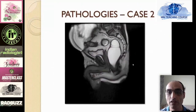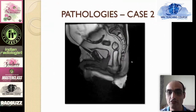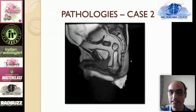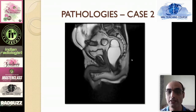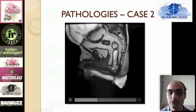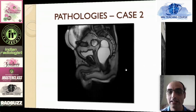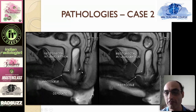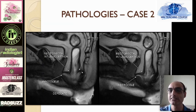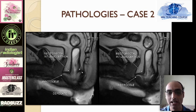In the next case, you see the entire rectum telescoping into the anal canal — that is a rectoanal intussusception, showing the classical arrowhead configuration. These patients initially pass some stools, then the intussusception occurs and they get choked up. The typical history is that they pass some stools initially but then get blocked, which is exactly what we see on the MR defecography.